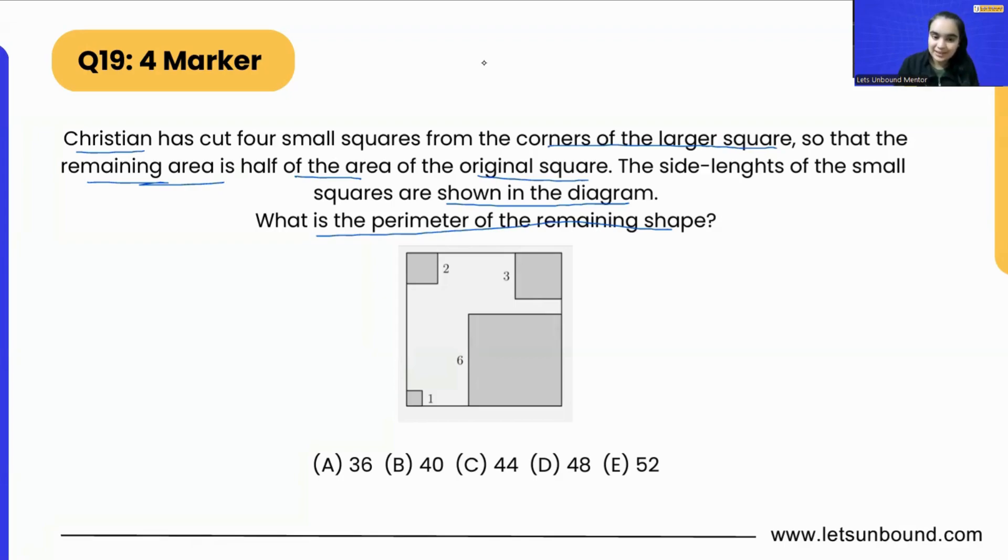We know that the area of this tiny little square which is having side length of two is going to be four. For three it is going to be nine, for six it is going to be 36, and for one it is going to be one. Why? Because to find out area of the square, the formula is side times side. That is two times two equals four, three times three equals nine, six times six equals 36, and one times one is one.